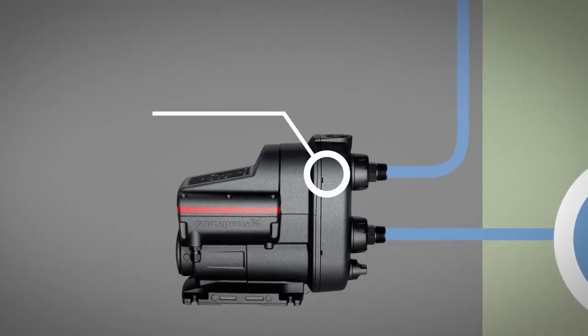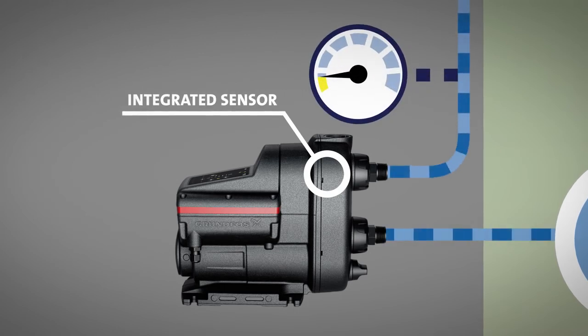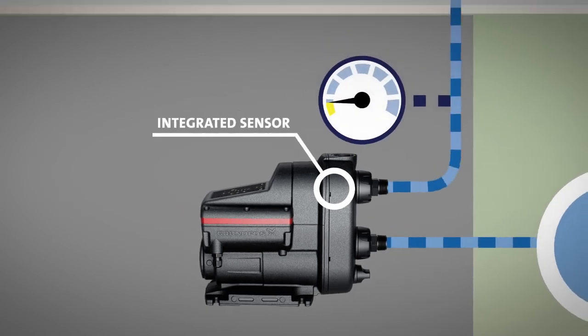Scala-2 is equipped with an integrated sensor that measures the water pressure delivered by the pump to the tap, for instance the shower.